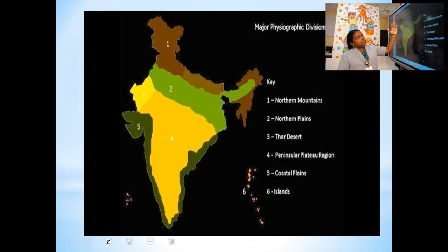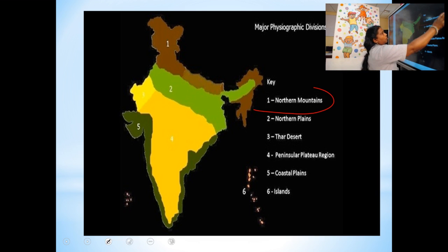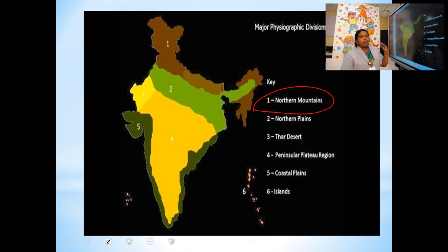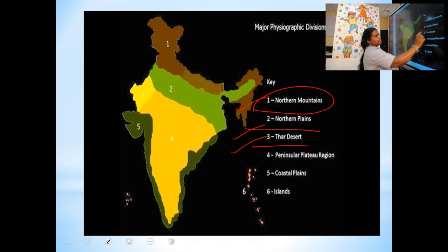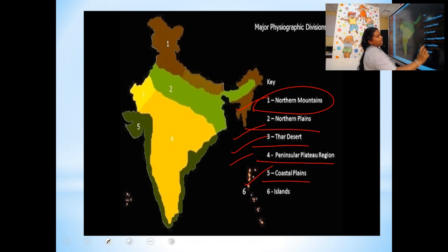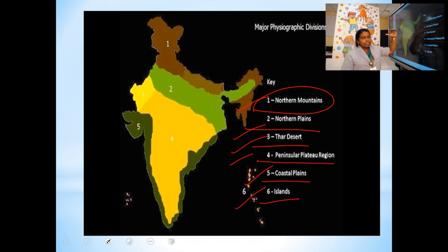Now let's study the physical features of India one by one. The physical features of India are divided into six: first, the northern mountains; second, the northern plains; third, the Thar Desert; fourth, the peninsular plateau; fifth, the coastal plains; and sixth, the islands.